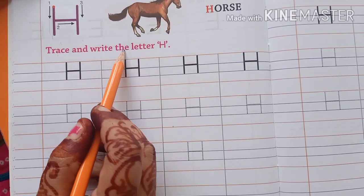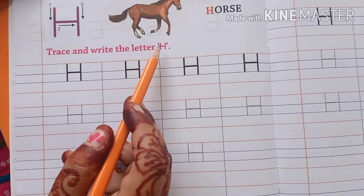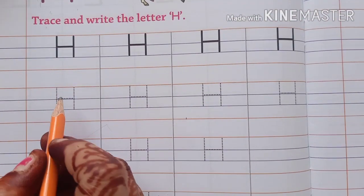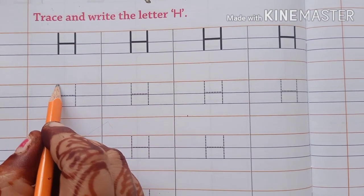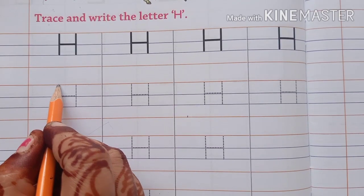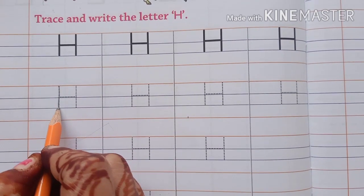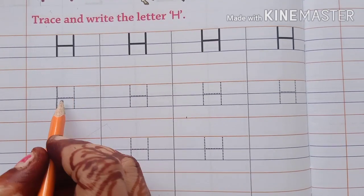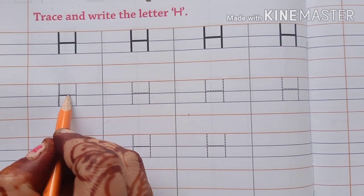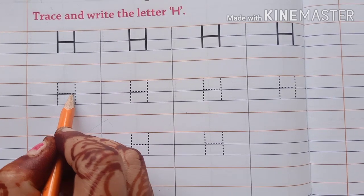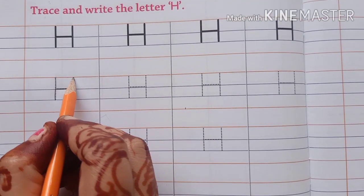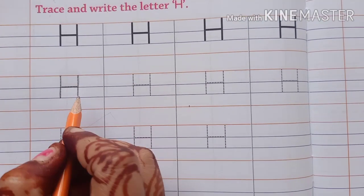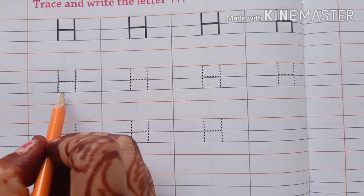Press and write the letter H. First we make a standing line, red to blue line, then a sleeping line. First blue line, then standing line, red to blue line. H.